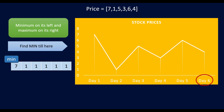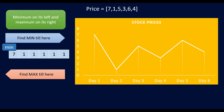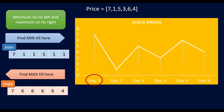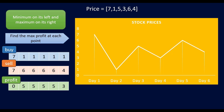Similarly, we need to find a price to sell the stock, so we find the maximum by moving in the opposite direction. On day 6 the max is 4; on day 5 it becomes 6 because 6 is higher than 4, and we keep doing this until we reach day 1. Now we have the minimum and maximum arrays. The profit is simply the sell price minus the buy price. Buying at price 1 and selling at price 6 gives us 5 units as profit.